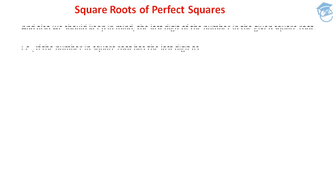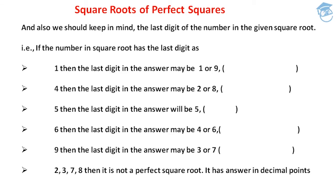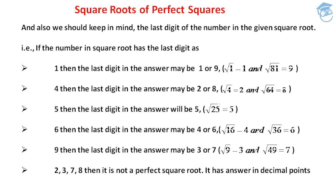We also have to keep in mind the last digit of the number under the square root. For example, if the number under the square root has its last digit as 1, then the last digit in the answer may be 1 or 9. Because √1=1 and √81=9 — both have 1 as their last digit, so the answer could end in 1 or 9.